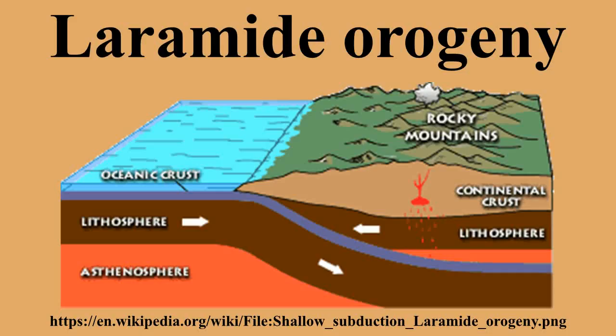The Laramide orogeny was a period of mountain building in western North America, which started in the late Cretaceous 70 to 80 million years ago and ended 35 to 55 million years ago. The exact duration and ages of beginning and end of the orogeny are in dispute. The Laramide orogeny occurred in a series of pulses, with quiescent phases intervening.